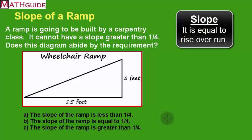So by looking at the diagram, we can see that we have a rise of three feet and we have a run or a horizontal distance of 15 feet.